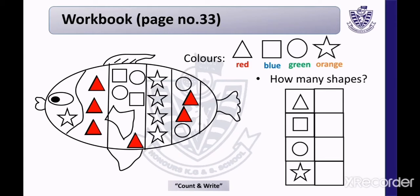Now we will color the square with blue color, like this. Similarly, color the other squares with blue. Now we will color the circles with green color, like this.